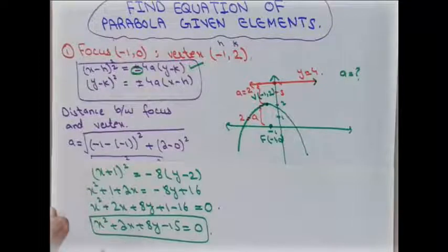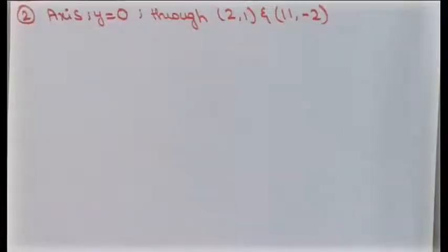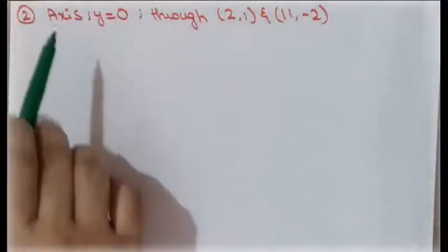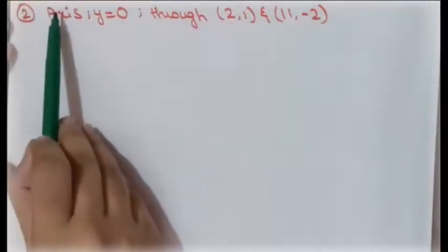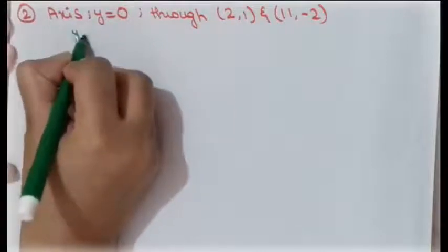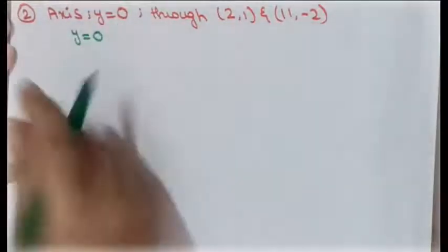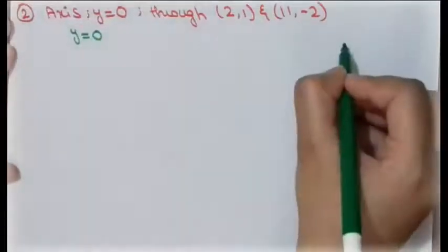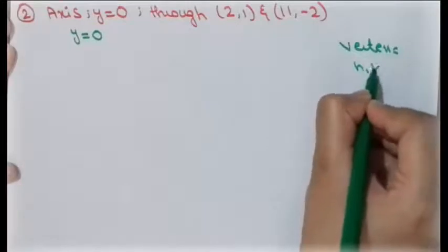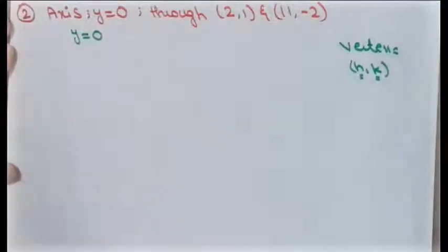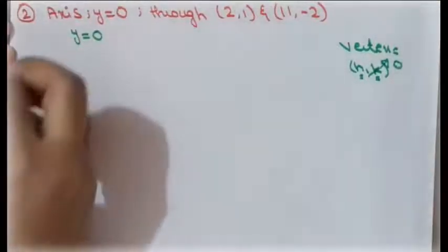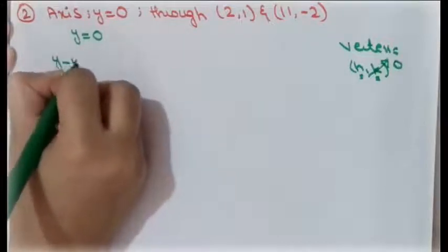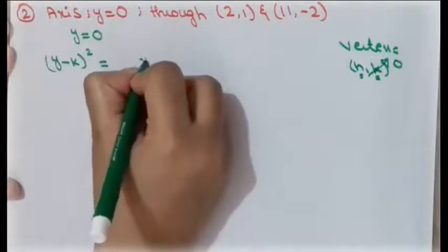In the second example, we are given the axis y = 0 and two points on the parabola. Since the axis is y = 0, the y-coordinate of the vertex is 0, meaning k = 0. We use the equation (y - k)² = alpha(x - h), which simplifies to y² = alpha(x - h).